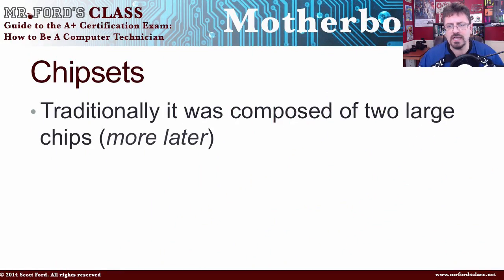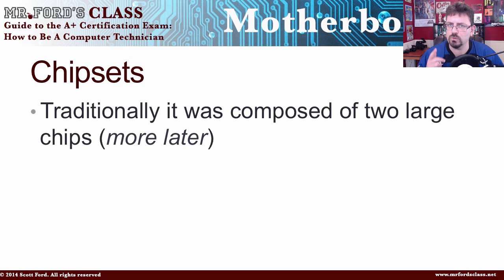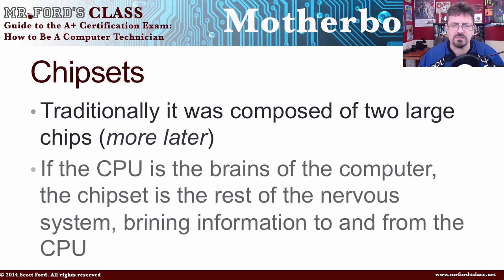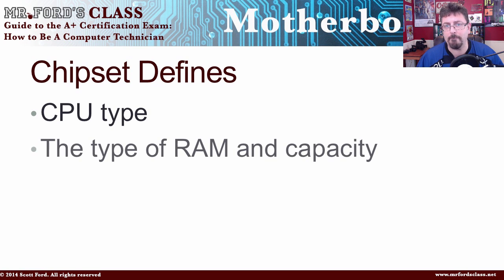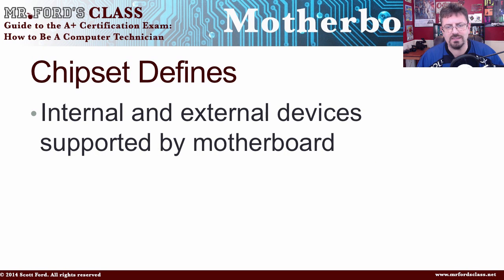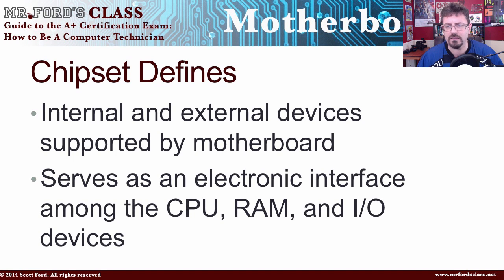They're called chipsets because traditionally it was composed of two large chips, which we'll talk about in just a few seconds. If the CPU is the brains of the computer, then the chipset is the rest of the nervous system — it's going to bring information to and from the CPU. So the chipset defines the CPU type, what kind of CPU you can use. It's going to define the type of RAM and how much RAM you can put on that motherboard. It's going to define the internal and external devices supported, and it's going to serve as an electronic interface among the CPU, the RAM, and I/O devices — input/output devices.